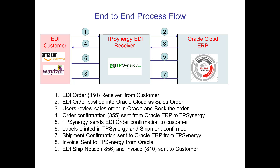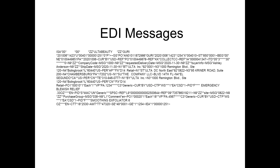Step 4: Labels printed in TP Synergy and shipment confirmed. Step 5: Advance ship notice ASN — EDI 856 sent to customer. Step 6: Shipment confirmation posted to Oracle Cloud automatically. Step 7: Shipment closed in Oracle Cloud and invoice generated. Step 8: TP Synergy pulls the invoice data from Oracle Cloud and sends invoice EDI 810 to customer.